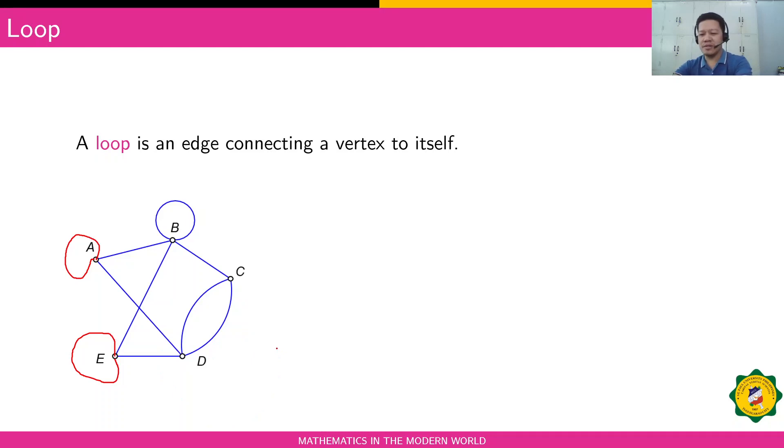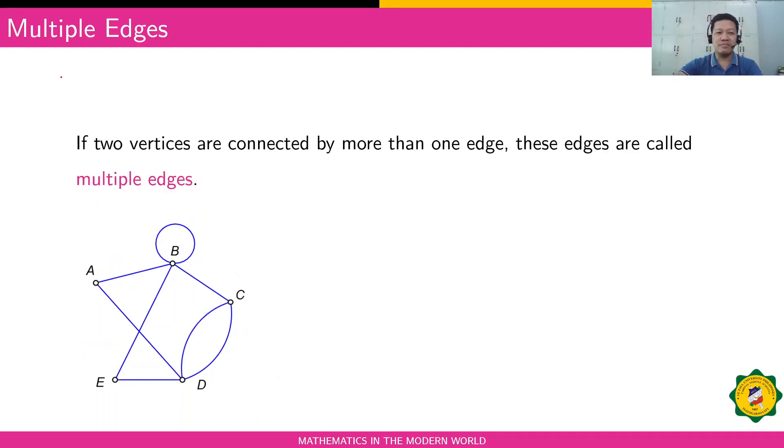Another one is multiple edges. If two vertices are connected by more than one edge, these edges are called multiple edges. In this graph, it's actually vertices C and D. The edges that connect vertex C and D are multiple edges. There are two lines connecting the two vertices. We can also add one more edge if you want, and that's still multiple edges. If we connect A and B with another edge that connects A and B, that will become multiple edges.